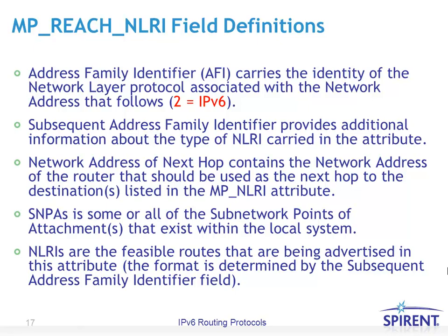The field definitions of a multi-protocol reachable NLRI include the address family identifier, set to 2 for IPv6. The subsequent address family identifier provides additional information about the type of NLRI carried. There can also be a next hop field containing the address to be used as the next hop to the destination, sub-network points of attachment, and NLRIs representing feasible routes being advertised in the attribute.